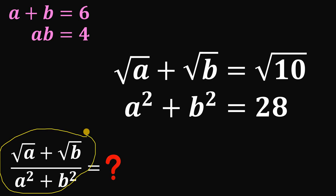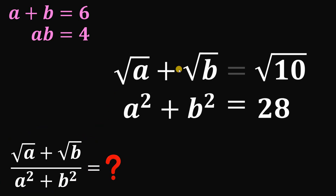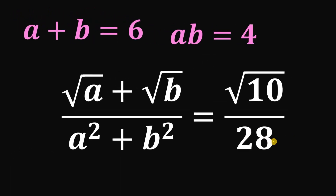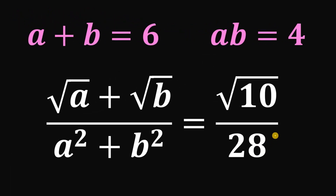Using these two results, we can now find the value of the expression. Square root of a plus square root of b, all over a squared plus b squared, equals square root of 10 over 28. This is in its simplest form, therefore our answer is square root of 10 over 28, and we are done.